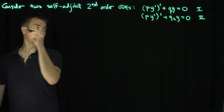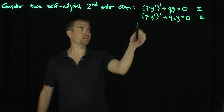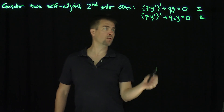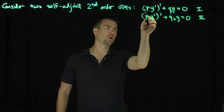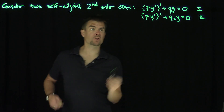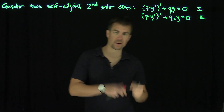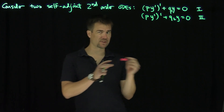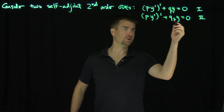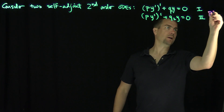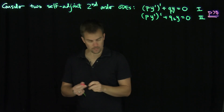The assumptions we're going to make are the typical ones: P is continuously differentiable, Q1 and Q2 are continuous, and P is greater than or equal to zero. That's an important assumption so we can construct oscillatory solutions and avoid sign disparities on the intervals we consider.